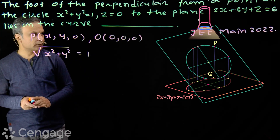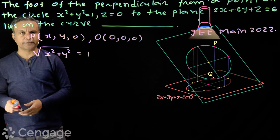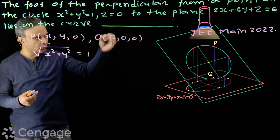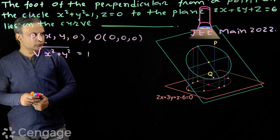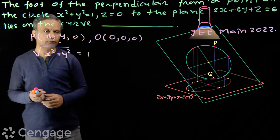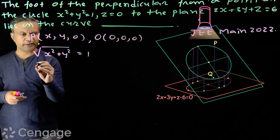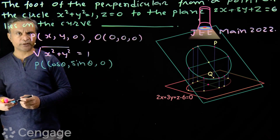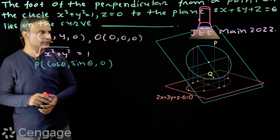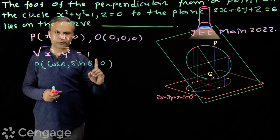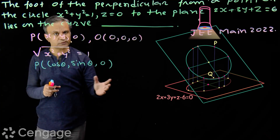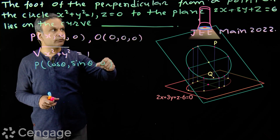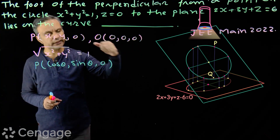We have a variable point P on the circle with coordinates (cosθ, sinθ, 0). To find the equation of the locus, we consider coordinates of point P as (cosθ, sinθ, 0), where x = cosθ and y = sinθ. To get the equation of the locus, we will eliminate θ. The strategy is: we introduce a variable and then eliminate it.